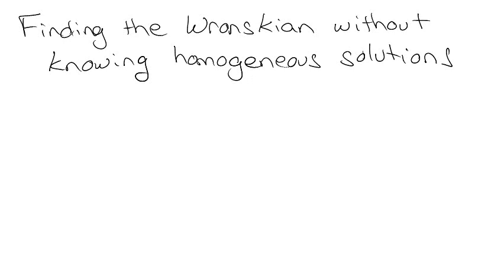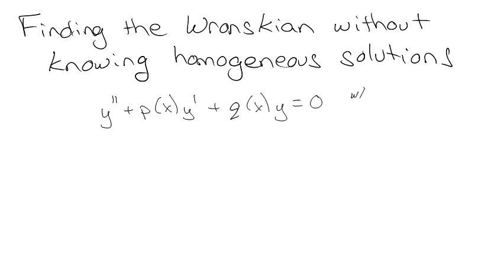Whenever we've been talking about using the Wronskian, we always assumed that we knew the solutions Y1 and Y2 of the homogeneous equation. The idea is: what happens if we don't know the solution? We're going to start off assuming we do, and then show that we didn't actually need to know after all. So say we've got this equation and it has the solutions Y1 and Y2.